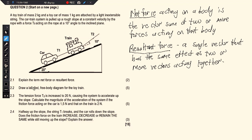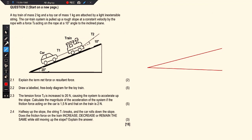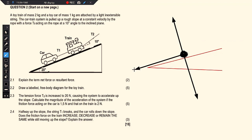Question 2.2 says draw a labelled free body diagram for the toy train. We are given five marks, meaning five forces. We have our incline — start by faintly showing the incline, which you will erase after drawing. Place a big black dot to indicate the object, the train. Then draw the normal force perpendicular to the inclined plane.